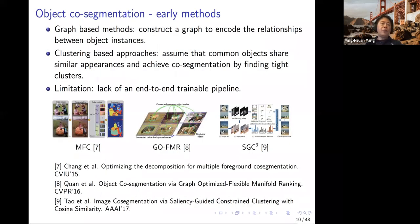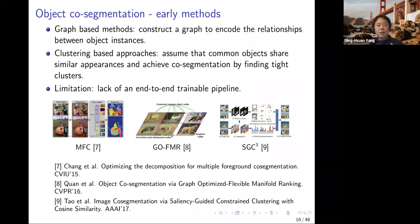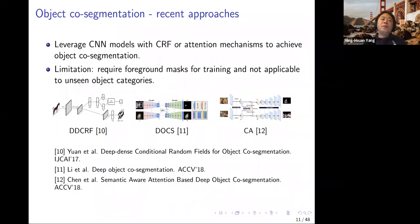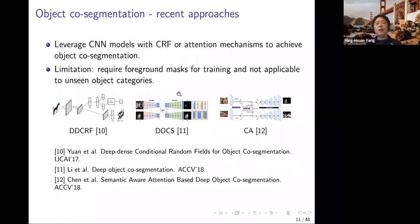For object co-segmentation, early methods used graph-based methods and construct graphs or use cross-range matching. In early days, people used simpler features without an end-to-end trainable pipeline. In recent years, several methods leverage CNN models with CRF or attention models for object co-segmentation. However, these methods require foreground masks for training and often do not work well for unseen object categories.